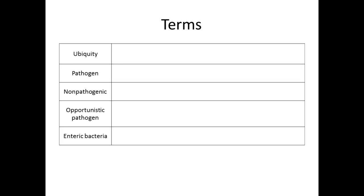Ubiquity is right in the title of one of these labs. What did you guys find that it means? Ubiquity is pretty much synonymous with everywhere. We already know from our exposure in general in life that microorganisms are found in the air, in our bodies, on our skin, on our tabletops, and outside in the soil and on leaves. We expect to see microorganisms growing because we know they're found just about everywhere — I can't actually think of a place where they're not.